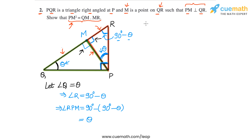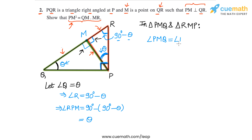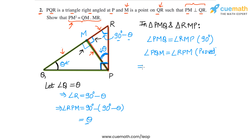Now let's compare these two triangles and apply AA similarity. In triangle PMQ and triangle RMP: angle PMQ = angle RMP, because both are 90°, and angle PQM = angle RPM, because both equal θ. This is what we have just shown. Therefore, by AA similarity, triangle PMQ is similar to triangle RMP.